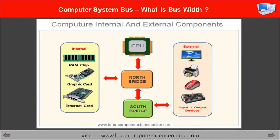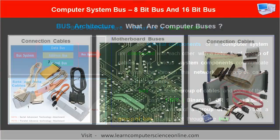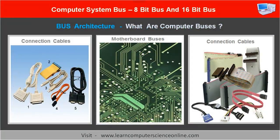The computer system consists of a number of internal and external components. These components are physically interconnected and communicate with each other through a network of wires running across the computer system. These wires connecting the internal components are referred to as computer buses. The computer buses are essential to the functioning of the computer system.